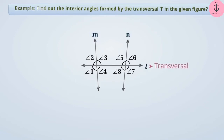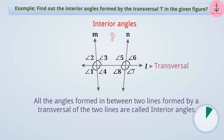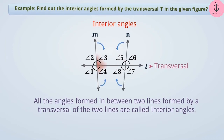All angles formed in between two lines by a transversal are called interior angles. The angles formed by transversal L between lines M and N are angle 3, angle 4, angle 5, and angle 8. Therefore, in the given figure, all these angles are interior angles.